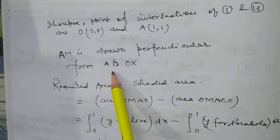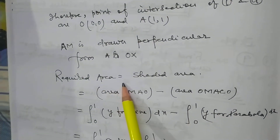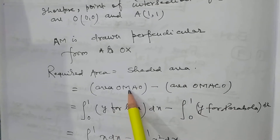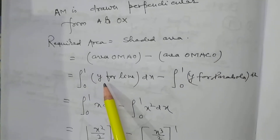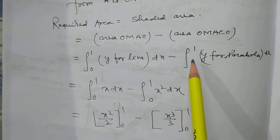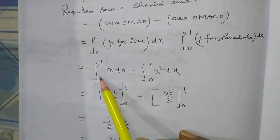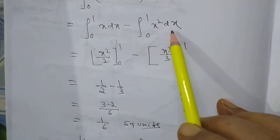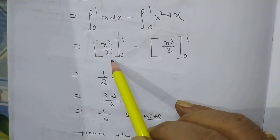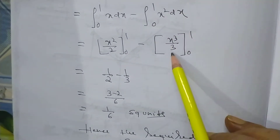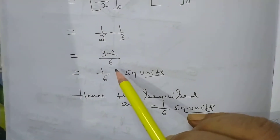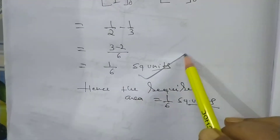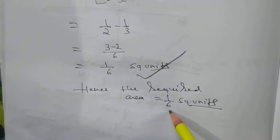AM is drawn perpendicular from A to the x-axis. The required area equals the shaded area = area of OMAO − area of OMACO = ∫₀¹ y(line) dx − ∫₀¹ y(parabola) dx = ∫₀¹ x dx − ∫₀¹ x² dx = [x²/2]₀¹ − [x³/3]₀¹ = 1/2 − 1/3 = 1/6 square units.